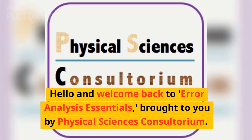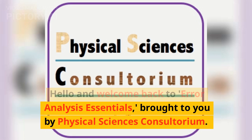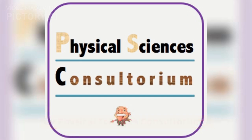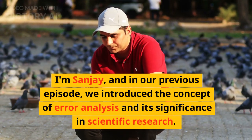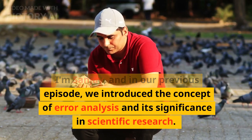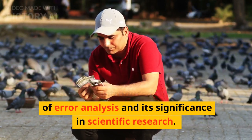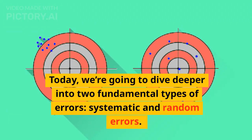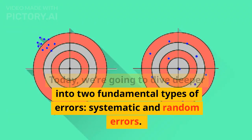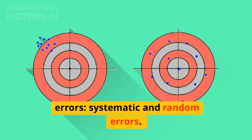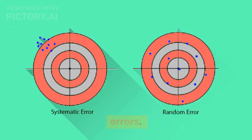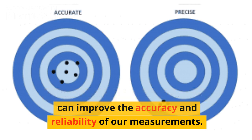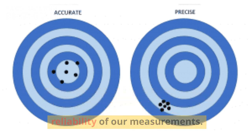Hello and welcome back to Error Analysis Essentials, brought to you by Physical Sciences Consultorium. I'm Sanjay, and in our previous episode, we introduced the concept of error analysis and its significance in scientific research. Today, we're going to dive deeper into two fundamental types of errors, systematic and random errors. By understanding these errors, we can improve the accuracy and reliability of our measurements.